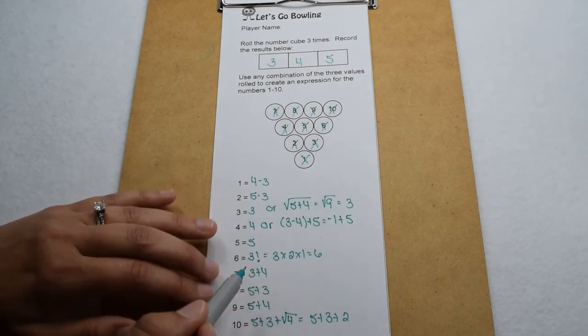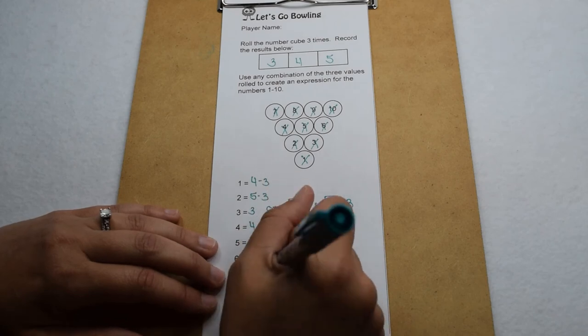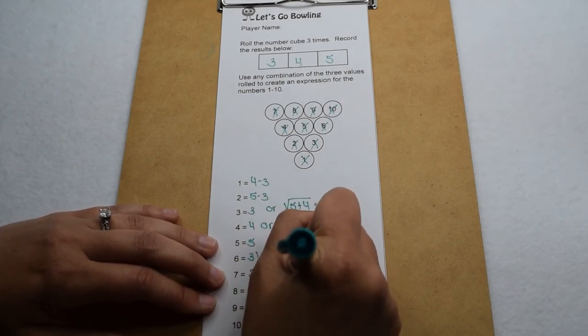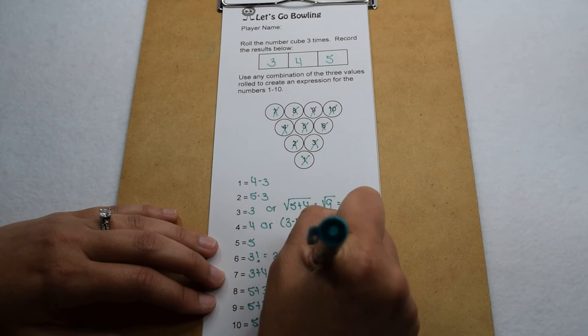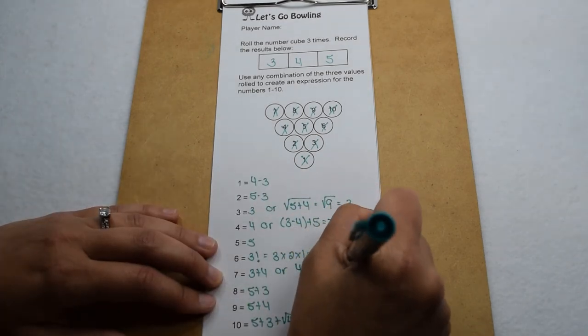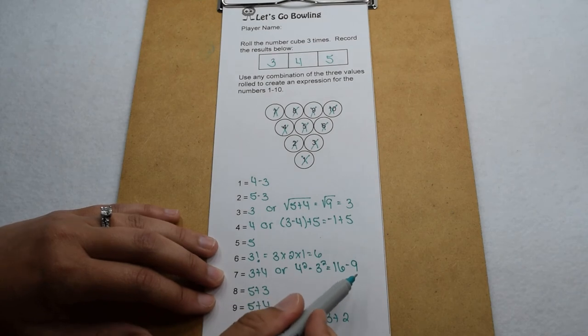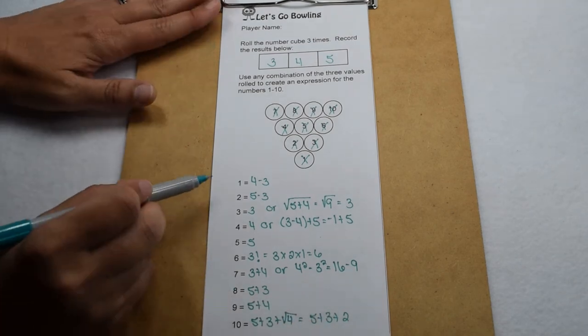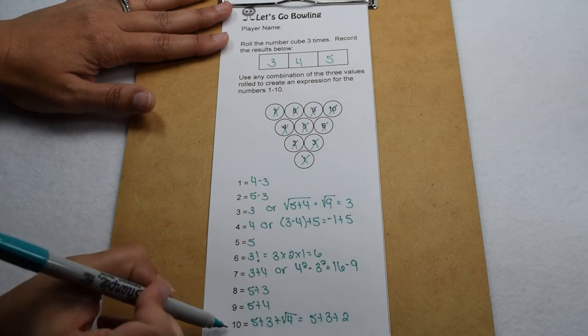I also could have used some squares. So for example, on seven, instead of adding three plus four, I could have done four squared minus three squared. Well, four squared is sixteen. Three squared is nine. Sixteen minus nine also gives me seven.